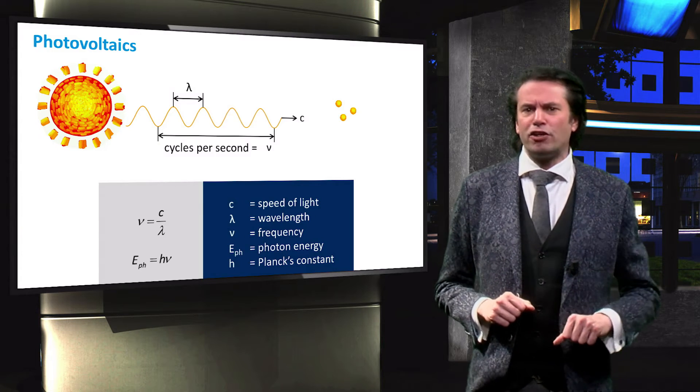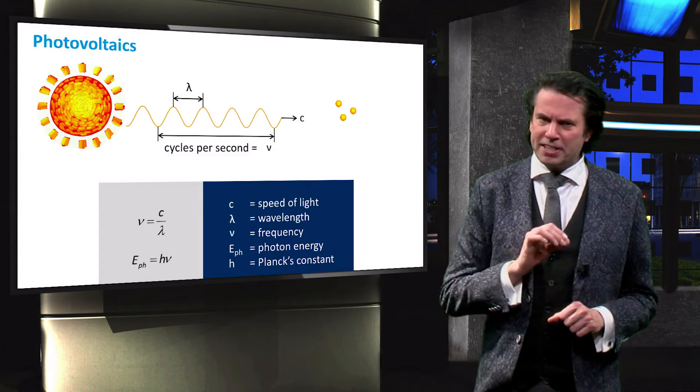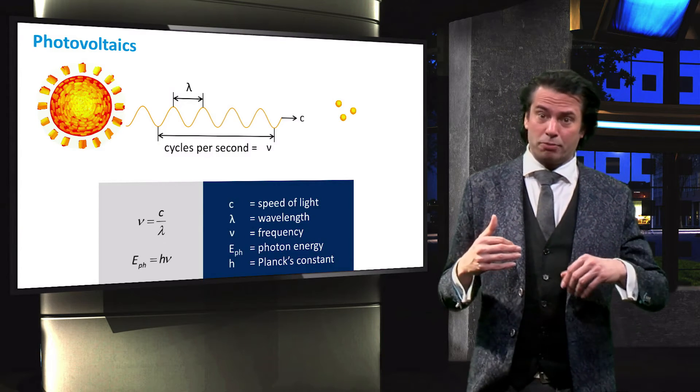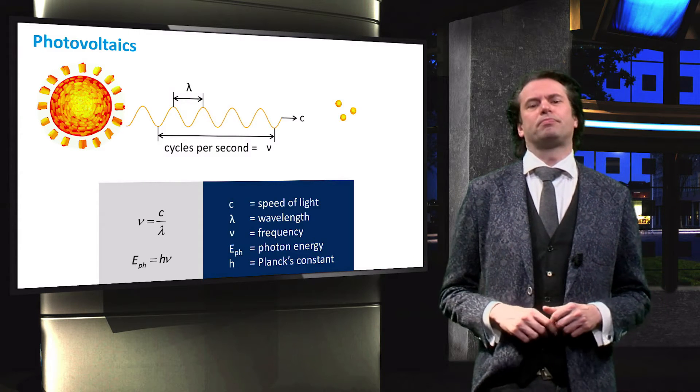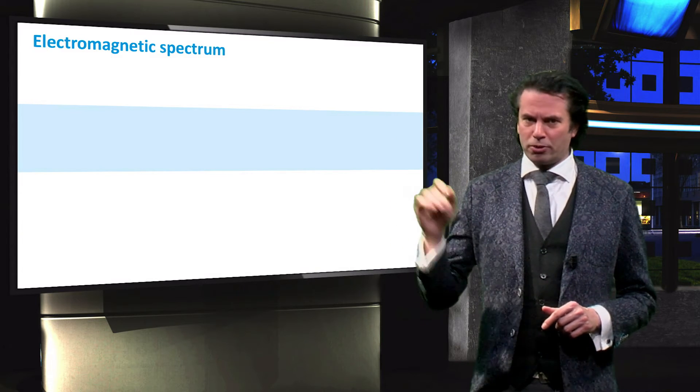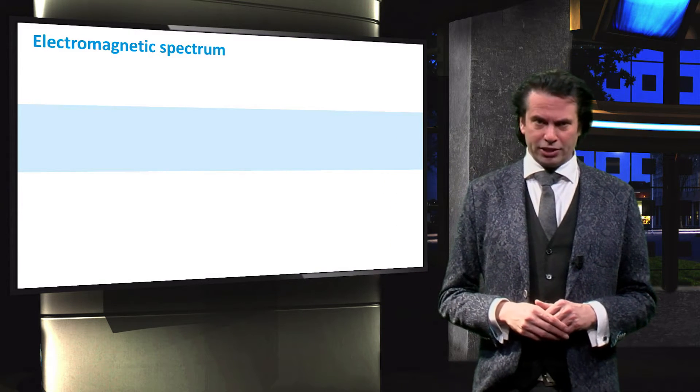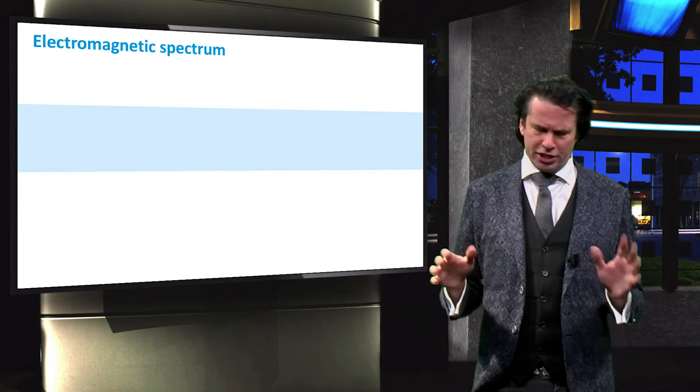The wavelength and the frequency of light are defining properties that dictate how electromagnetic radiation interacts with matter. Let's look at the spectrum of electromagnetic radiation to get a better understanding of these properties.